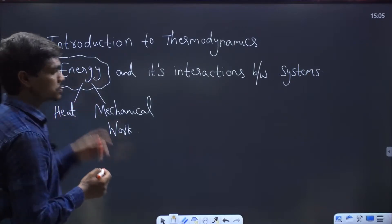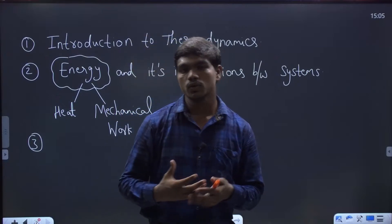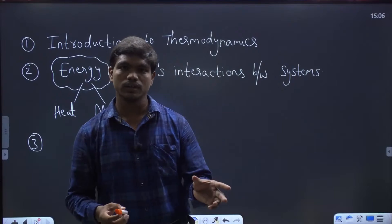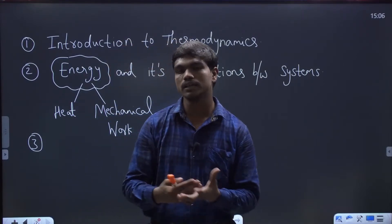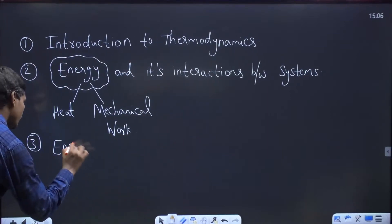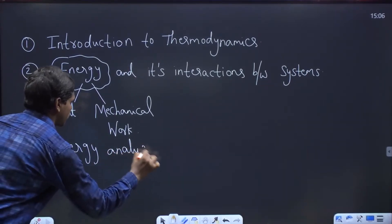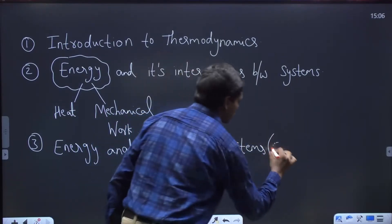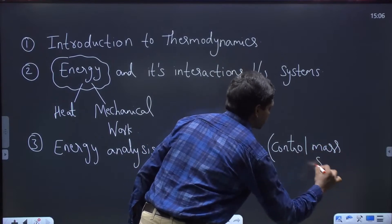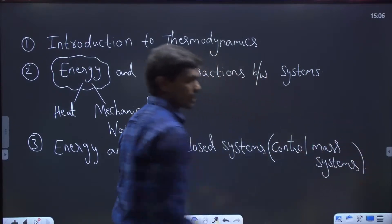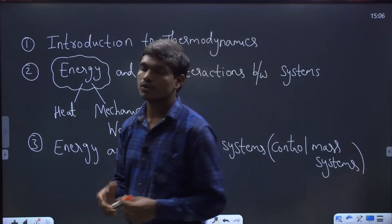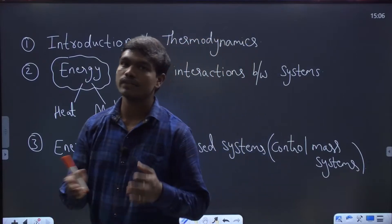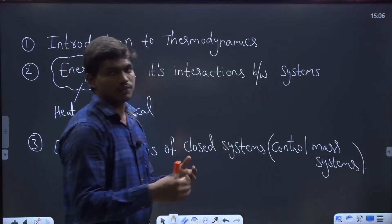Coming to the third chapter — we'll go across closed systems. A closed system is generally one in which only energy interactions can take place, meaning mass interactions cannot take place. The third chapter covers energy analysis of closed systems, also called control mass systems. When mass is not permitted to go in or out of the system but energy interaction can take place, we'll see what effects the energy interaction has on the closed system with respect to the surroundings.